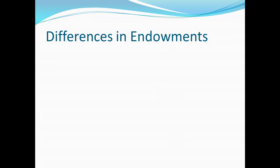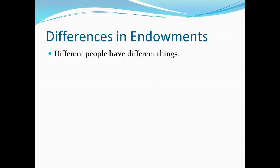There are also differences in endowments — different people have different things. This could be in terms of physical things, like one person having oranges and another having apples. But it's also perfectly possible for this to include things like abilities and other resources we happen to have. For example, one person might be very good at playing basketball, while another might not be good at basketball but relatively good at something else. This difference in endowments creates a possibility for specializing and trading.